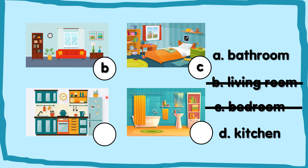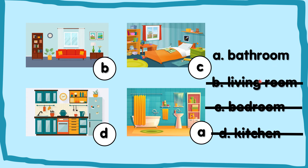And this is a kitchen. Mummy cooks in the kitchen. Kitchen is D. You write D over here. And the last one is bathroom. We bath in the bathroom. Bathroom is A. So we write A in this column.